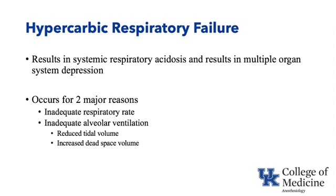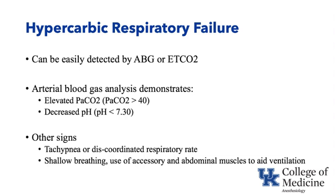Hypercarbic respiratory failure results in systemic respiratory acidosis and multiple organ system depression. Like hypoxemic respiratory failure, it occurs for two major reasons: inadequate respiratory rate, and inadequate alveolar ventilation, caused by a reduced tidal volume or an increased dead space volume. It is easily detected on blood gas or end-tidal CO2 by an elevation in PaCO2, typically above 40, and/or a decreased pH, typically less than 7.3.